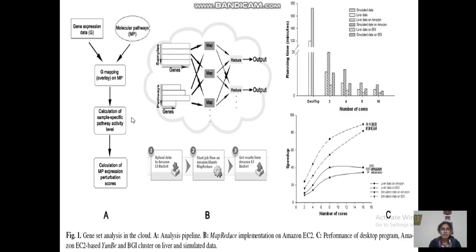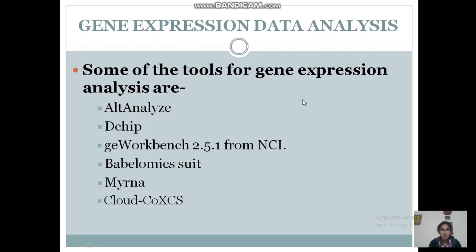Gene expression analysis is a three-step process. In the first step, there is an analysis pipeline where one calculates and analyzes gene expression. The output is then transferred to the second step, which consists of MapReduce — a programming model designed for processing large volumes of data in parallel by dividing the work into a set of independent tasks. The output from the second step is forwarded to the third step where the result is obtained, which can be in the form of a bar graph or a line graph. Various tools available online for gene expression analysis include ELT Analyze, D-CHIP, G-Workbench, WebLomics Suite, Merna, and CloudCo XCS.